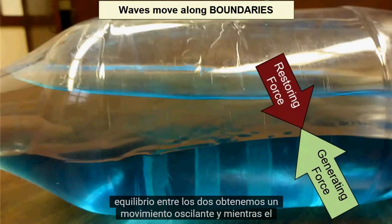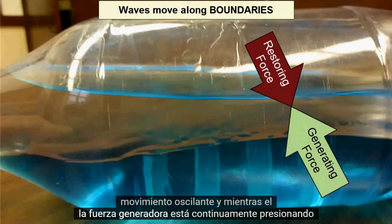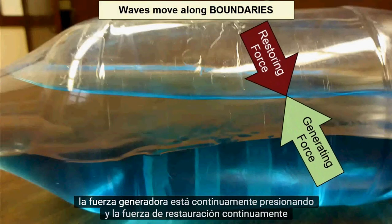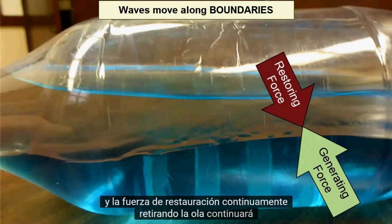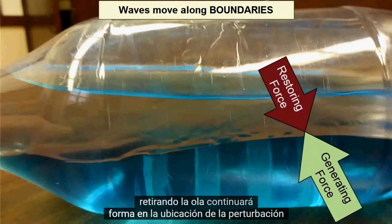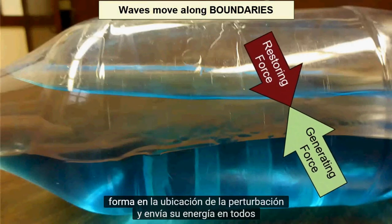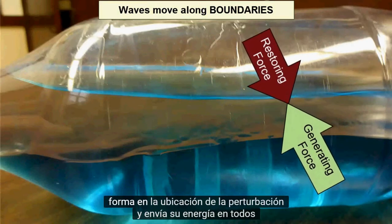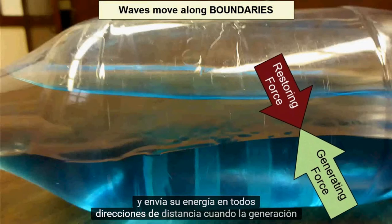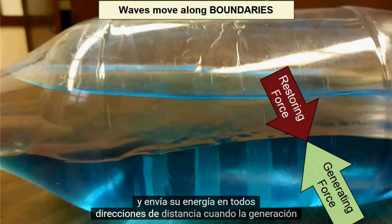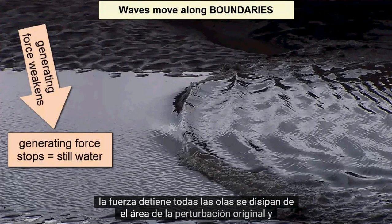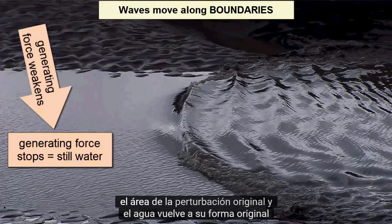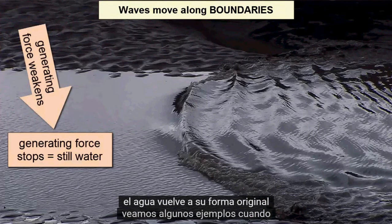As long as the generating force is continuously pushing and the restoring force continually pulling back, the wave will continue to form in the location of the disturbance and send out its energy in all directions away. When the generating force stops, the waves all dissipate from the area of the original disturbance and the water returns to its original shape.